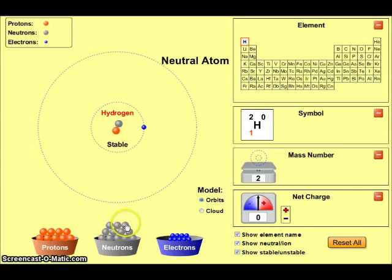Adding another neutron will produce an atom which has a mass of three because of the one proton and two neutrons, so this is a third isotope of hydrogen. This one is called tritium.